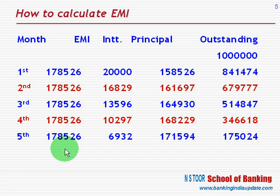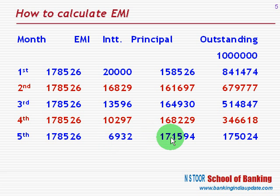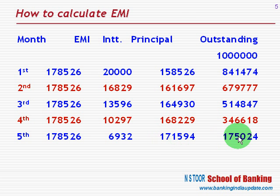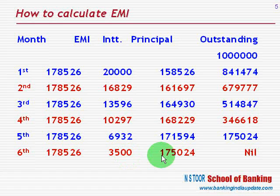At the end of the fifth month, this is the amount of installment. Out of the total amount of installment paid, this amount is used for interest payment and the balance amount is used for payment of principal. The principal remaining at the end of the fifth month is this much. For the sixth month, this is the amount of installment. On this amount, this is the interest to be charged. The balance amount goes as repayment of principal, so at the end of the sixth month, the principal loan will be nil.